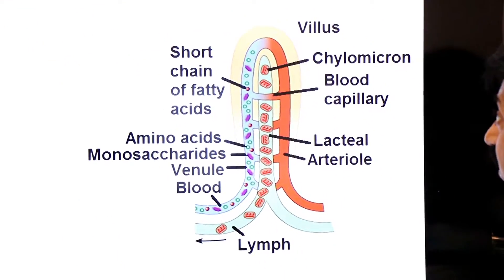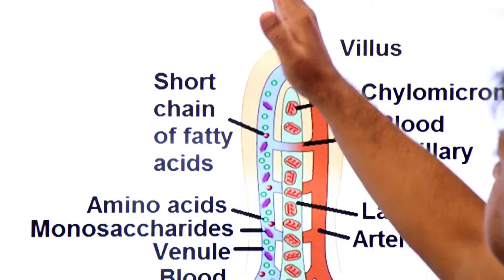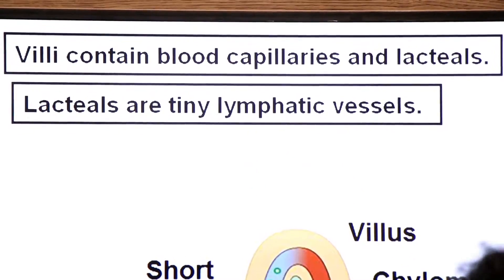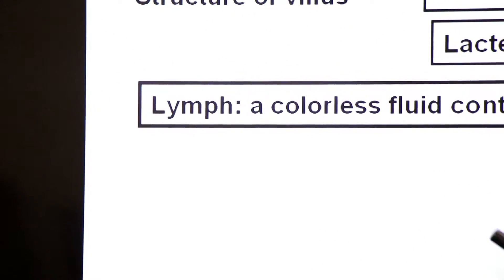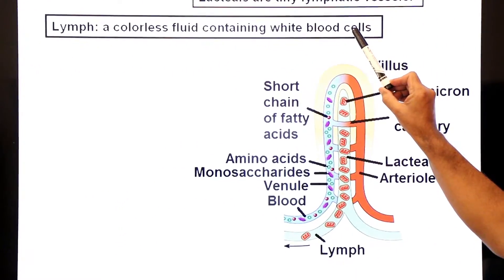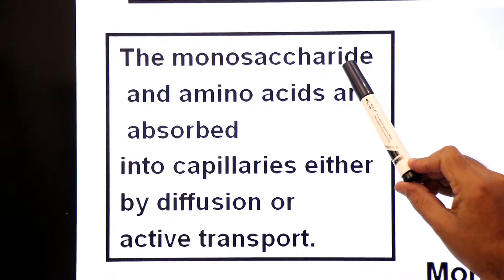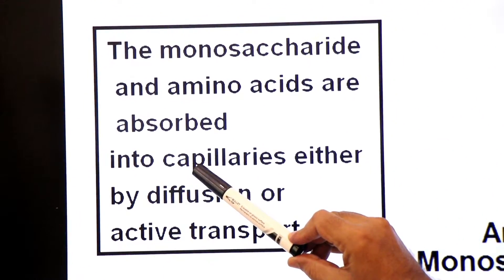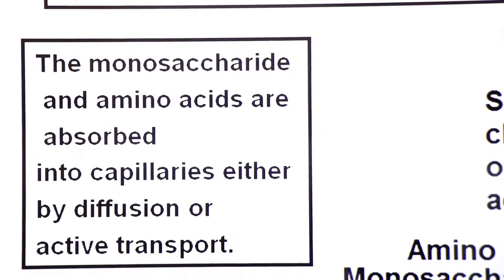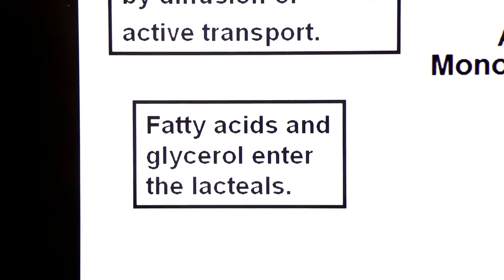Each villus contains blood capillaries and lacteals. Lacteals are tiny lymphatic vessels. A colorless fluid called lymph flows in lymphatic vessels; lymph contains white blood cells but no red blood cells, which is why it is colorless. Monosaccharides and amino acids are absorbed by the blood capillaries by diffusion or active transport, while fatty acids and glycerol enter into the lacteals.